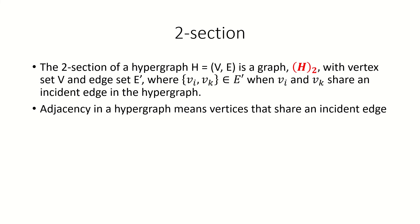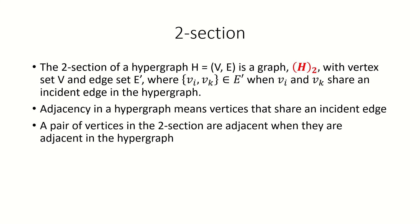Remember that the definition of adjacency between a pair of vertices in a hypergraph is that there exists an edge that they are both incident to. So another way of describing the two section of a hypergraph is that it's an ordinary graph built on the same vertex set as the hypergraph, and in which two vertices are adjacent when they're adjacent in the hypergraph.